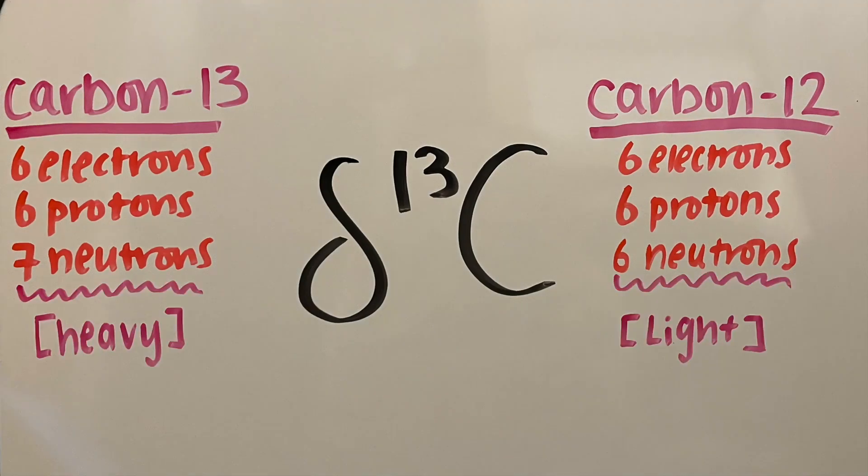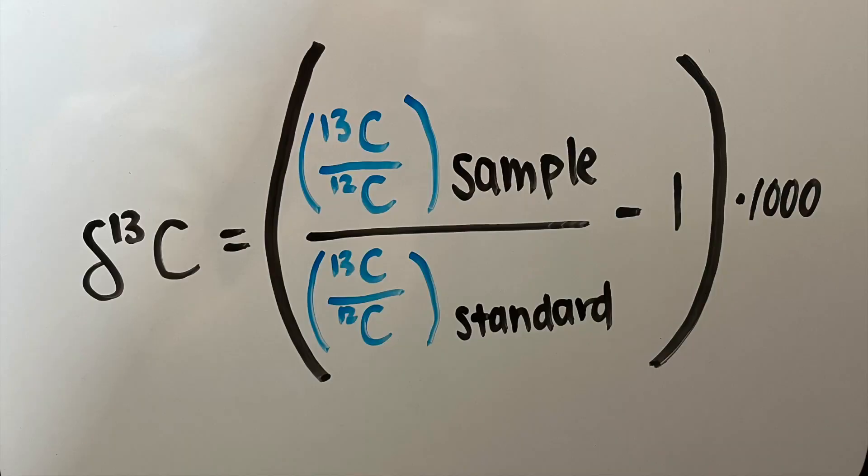This ratio varies depending on climatic and environmental factors, and so it's a useful tool for studying paleoclimate. It's expressed as per mil, and it's calculated by comparing the ratio in your sample relative to a reference standard, which is basically a sample of known isotopic values.